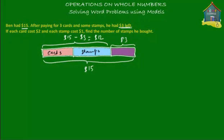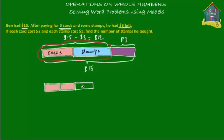Now let's look only at this part — let's zoom in on the cards and stamps together. We have the cards here, and we know that he bought three cards, so we'll make three blocks of equal size. There we go: one card, two cards, and three cards. Each of the cards is $2. He also bought some stamps, but we don't know how many, so let's make a broken box — the broken box tells you that the number of stamps is unknown.